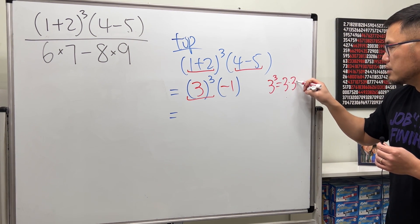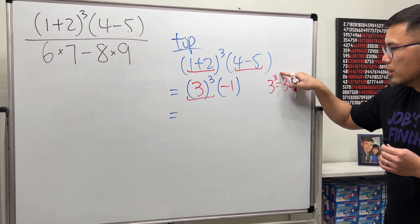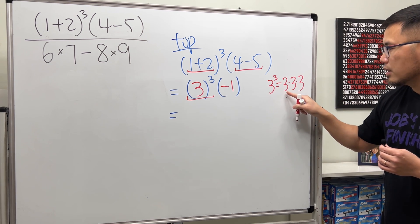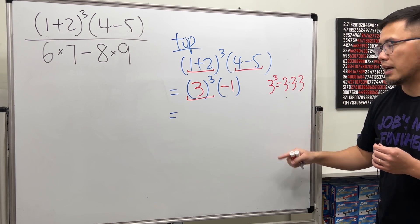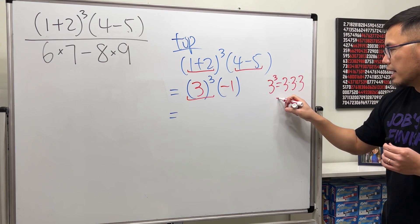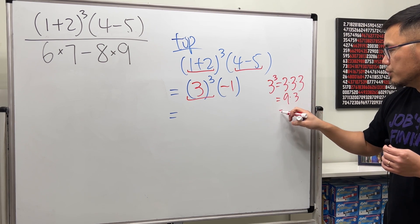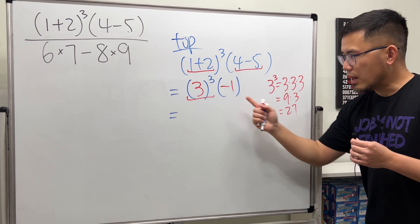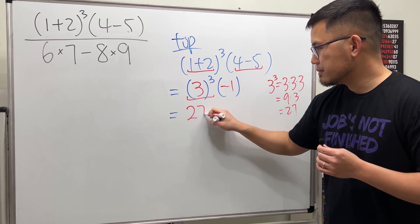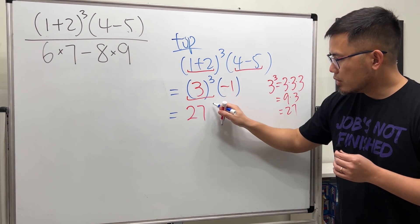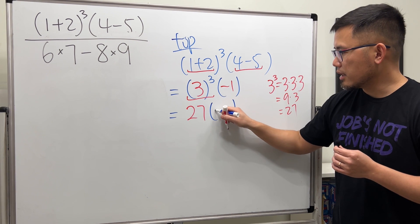So 3³ means what? Means 3×3×3. That's what the exponent is for. It tells you write this number down however many times and then multiply. 3×3 is 9, times one more 3 we get 27. So that will be right here: 27.